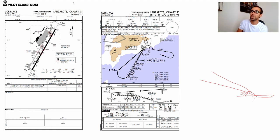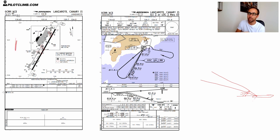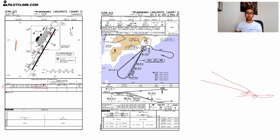Let me show you a real example. Looking at the Lanzarote Jeppesen chart 10-9, in the runway information section we've got runway 03 and runway 21. The PAPI for runway 03 is three degrees and the PAPI for runway 21 is 3.7 degrees. That means the PAPI for runway 21 has a steeper descent, so if you maintain two whites and two reds on final for runway 21, you're flying a steeper descent compared to runway 03.